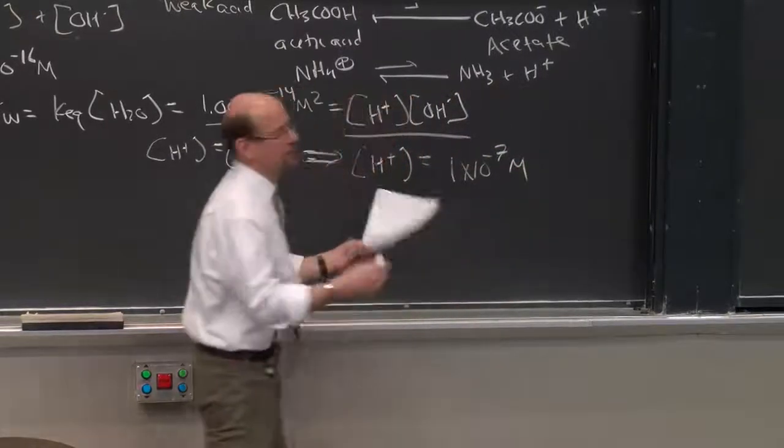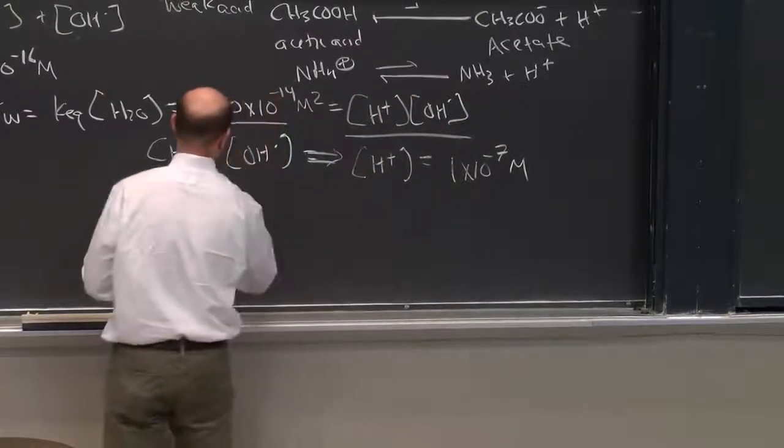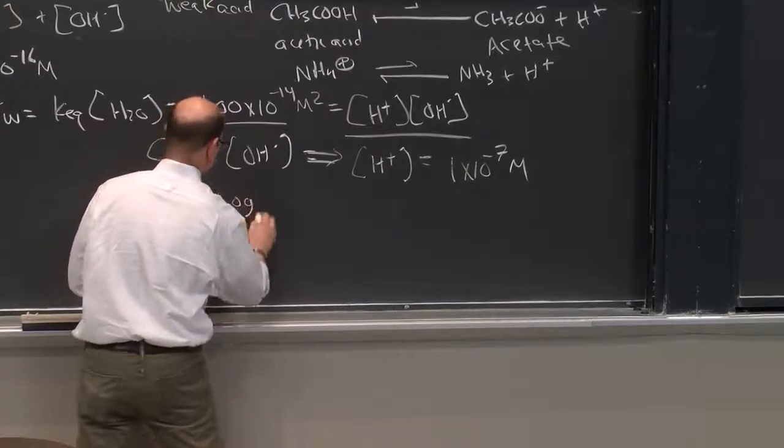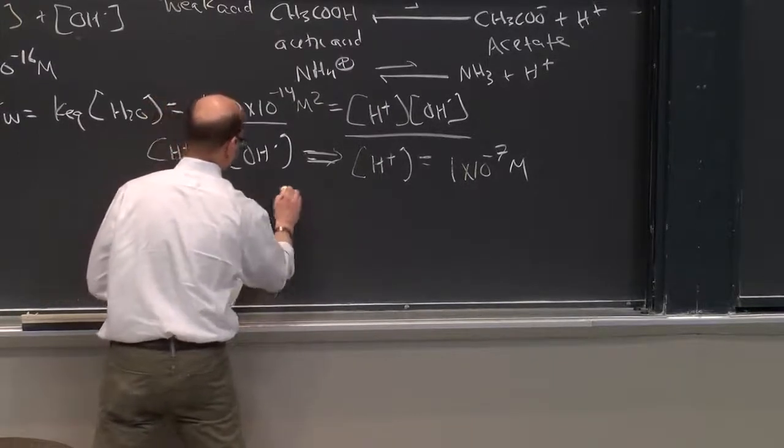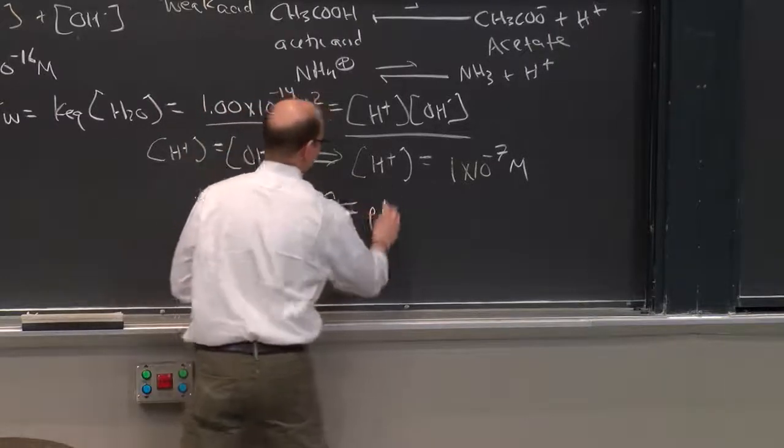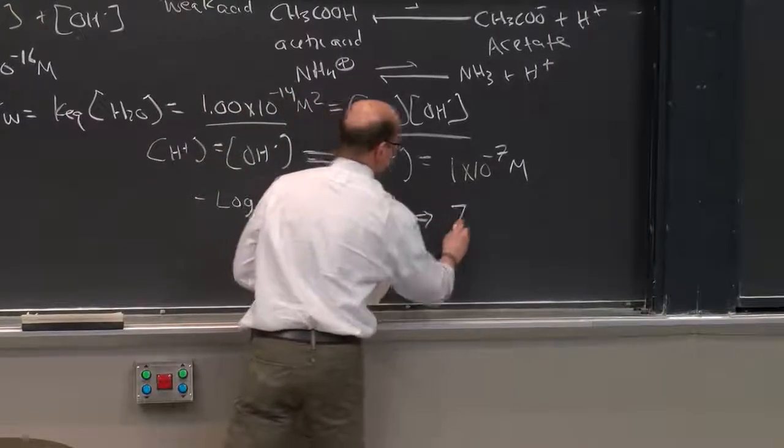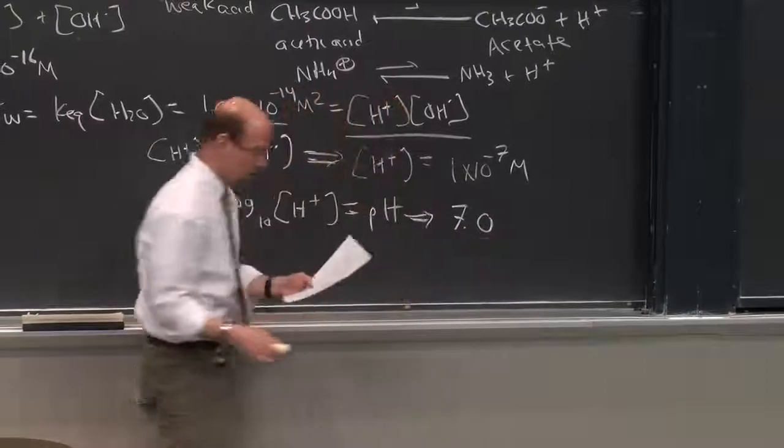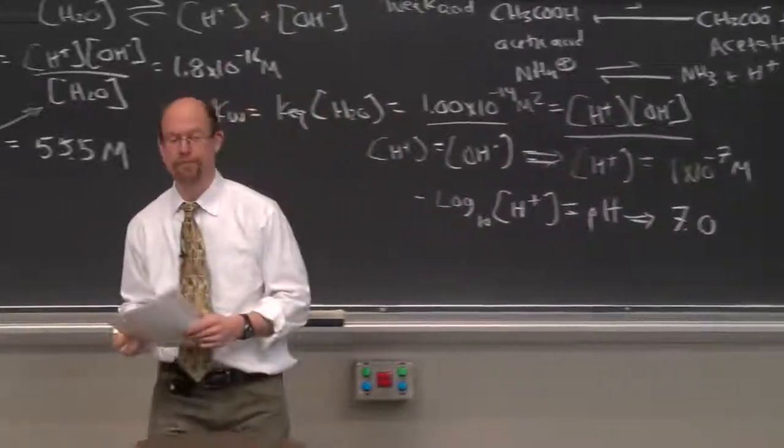Because this is cumbersome, we take the negative logarithm to base 10 of the concentration of protons. That, as you know, is simply the pH. This implies that the pH for one liter of water is exactly 7.0.